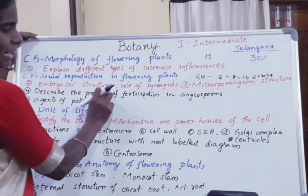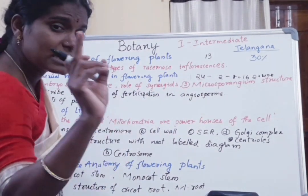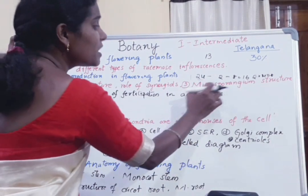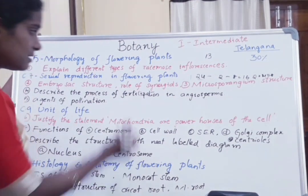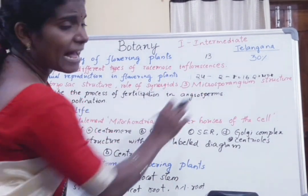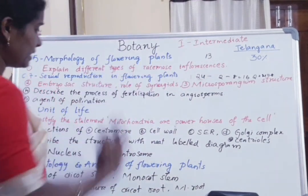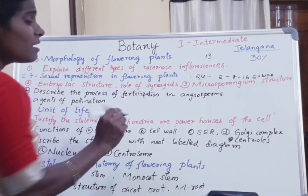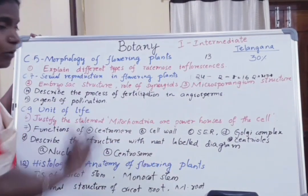Next is the female gamete, then the male gamete. Microsporangium structure — that means pollen grains, how they develop in the microsporangium, and their internal layers we should write. Next, the process of fertilization in angiosperms — this is also a very, very important question in the 7th chapter. And agents of pollination: biotic and abiotic factors that are useful in pollination.